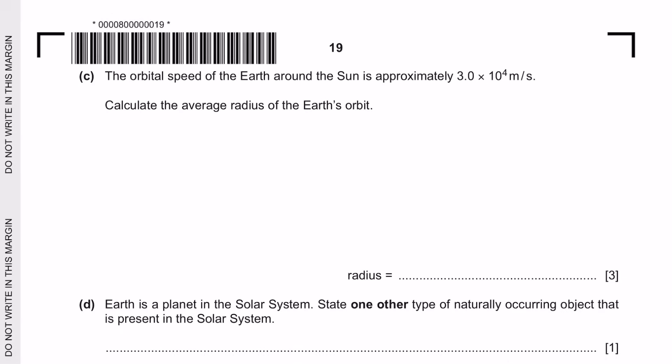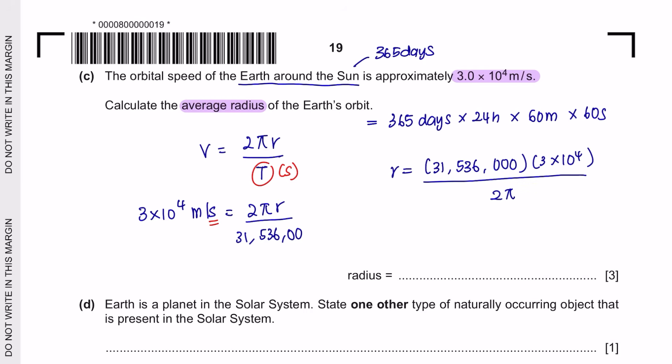Next question C. The orbital speed of the earth around the sun is approximately 3 times 10 to the power of 4 meters per second and we are asked to calculate the average radius. So the formula for this is orbital speed equals to 2 pi r divided by t. The velocity is 3 times 10 to the power of 4. And since we are looking for radius, we leave that as our unknown. And since the speed is measured per second, so our time also has to be in second. The time taken for earth around the sun is 365 days. So this means that we have to convert 365 days multiplied by 24 hours 60 minutes and 60 seconds. And now rearranging the formula, the radius would be 1.5 times 10 to the power of 11 and the unit is meters.